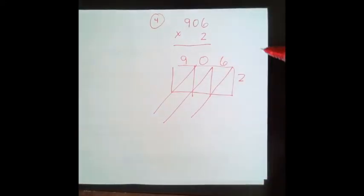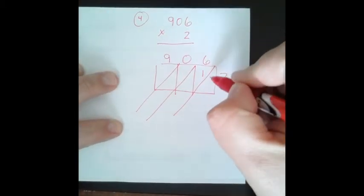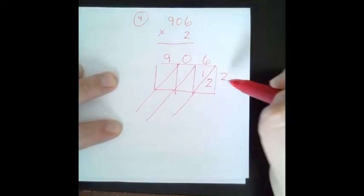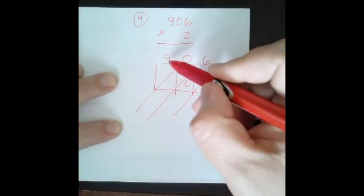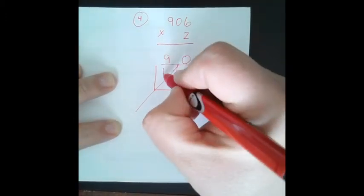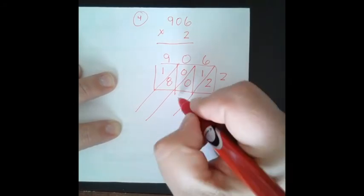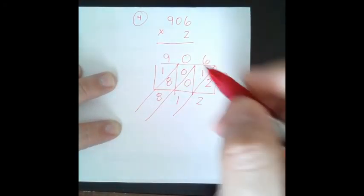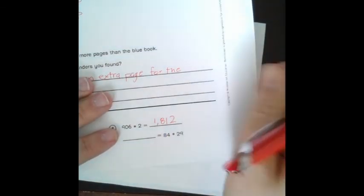All right. 906 times 2. I'm going to do a lattice for that. So I went ahead and set my lattice up at 3 by 1, since it's a 3 by 1 problem. 9, 0, 6 for 906 and 2. 6 times 2 is 12, put the 1 there and the 2 here. 0 times 2 is 0, but we have to fill both of these here with our placeholders of 0. 9 times 2 is 18, put the 1 here and the 8 here. So now we're going to add our diagonals. So it's 2, 1 plus 0 is 1. 8 plus 0 is 8. And 1 plus 0 is 1. So it's 1,812.